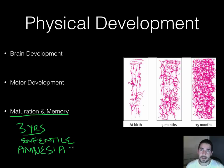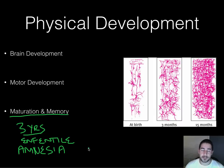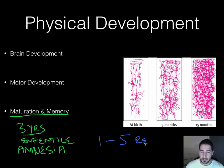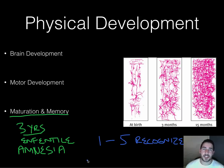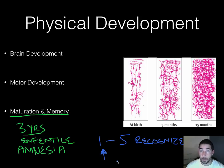For instance, there was a study where early elementary students were asked to pick out kids from their preschool class. They could consciously recognize maybe one in five. But measurements like skin temperature and other methods showed a marked increase in response for kids who actually had been in their class. So the brain could recognize them without the person even knowing it — showing that learning happens even before explicit memory forms.